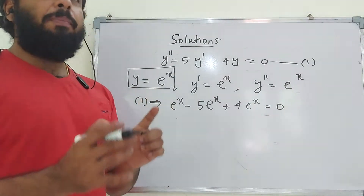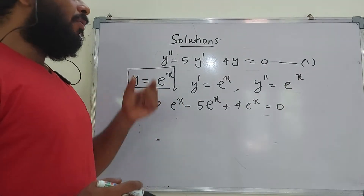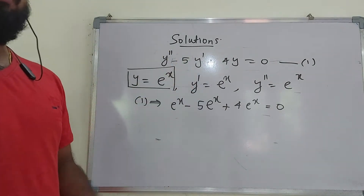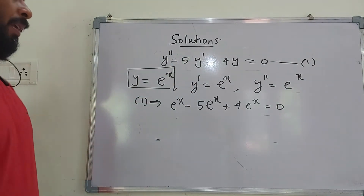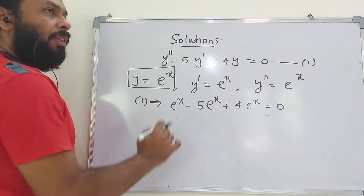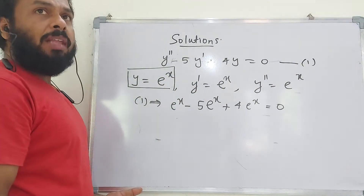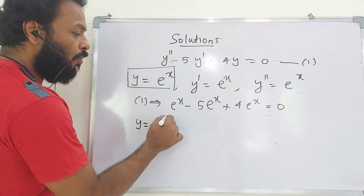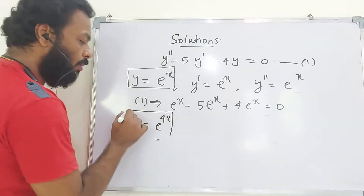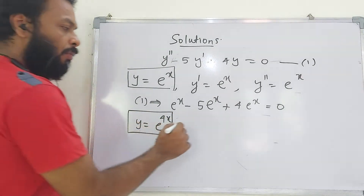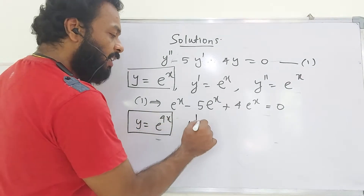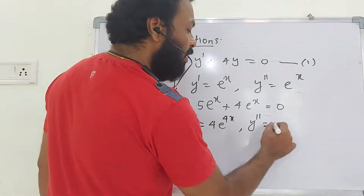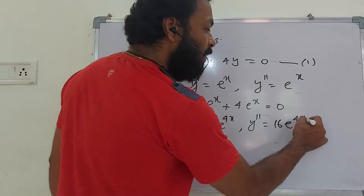Any relation between the dependent variable and independent variable which satisfies the given differential equation is called a solution. A differential equation may have more than one solution. For example, if we take y = e^(4x), then y' = 4e^(4x) and y'' = 16e^(4x).